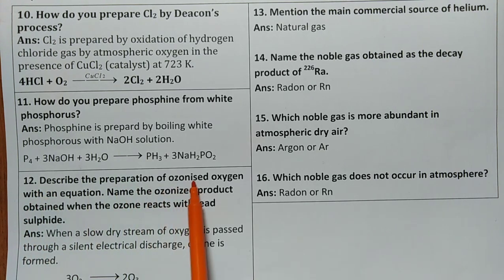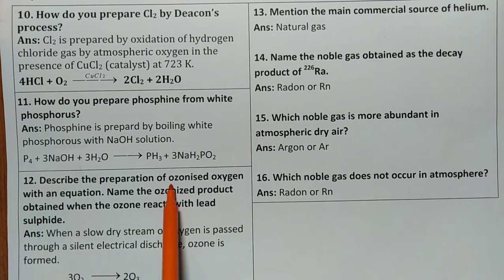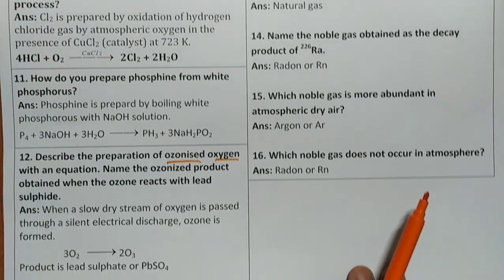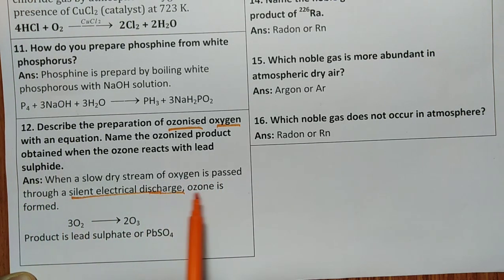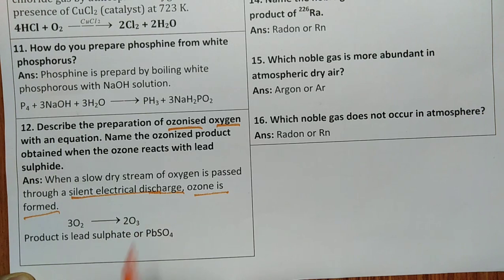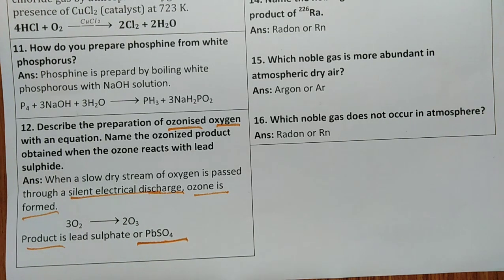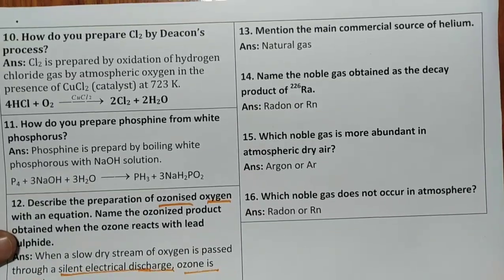Describe the preparation of ozonized oxygen with an equation. Name the ozonized product obtained when the ozone react with lead sulfide. Two marks question. When slow and dry stream of oxygen is passed through silent electric discharge, you will get ozone. 3O2 to 2O3. Very simple reaction. Product formed is lead sulfate. Remember that point.